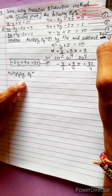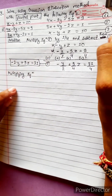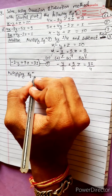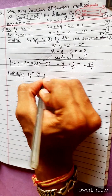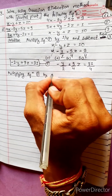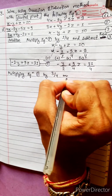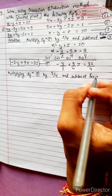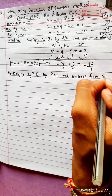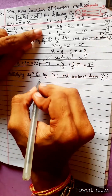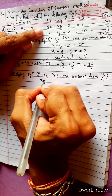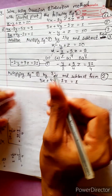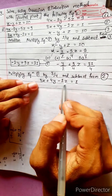Now solving Equation 1 and Equation 2. Multiply Equation 1 by 3/4 and subtract from Equation 2. Write Equation 2 as it is: 3x plus 4y minus 2z equals 1.